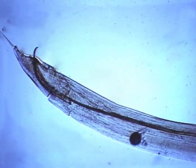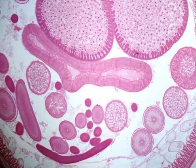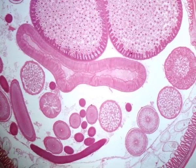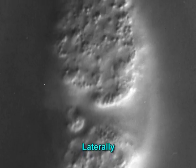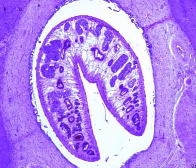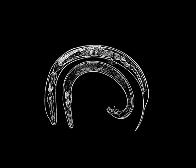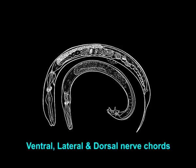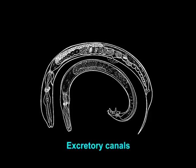In cross-section of a nematode, the hypodermis bulges into the body cavity in four locations: dorsally, ventrally, and laterally. These bulges are termed cords. The cord area encloses the longitudinal nerves — the ventral, lateral, and dorsal nerve cords — and in some groups, the lateral cords contain excretory canals.